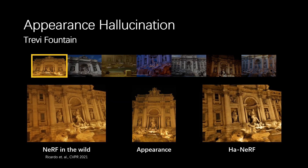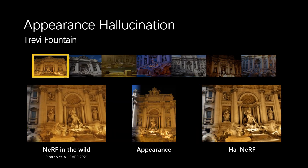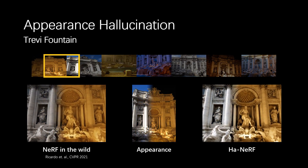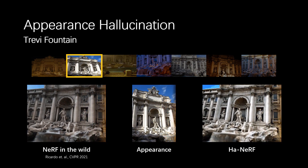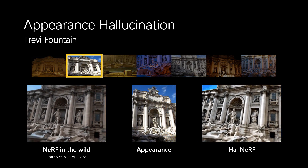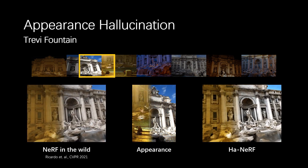Moreover, we can see that HA-NeRF can capture high-frequency information about appearance and hallucinate the sunshine and light reflection of the Trevi Fountain.